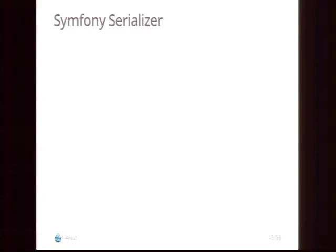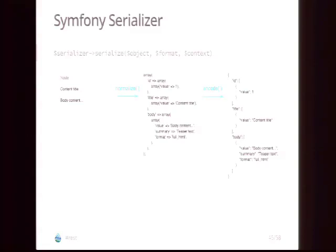We depend on the Symfony Serializer component. Serializer is completely independent — you don't have to use REST to use it. All you have to do is get it from the container and call serialize(), passing in your object and the format. Optionally you can pass context. What it does is take that object — say a node — pass it through a series of normalizers to translate that object structure into an array structure. That array can be different for different formats. Then the encode step takes the array into a string — in JSON it adds curly braces, in XML it adds angle brackets and tags.